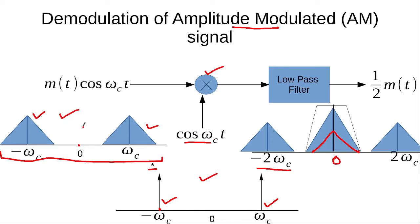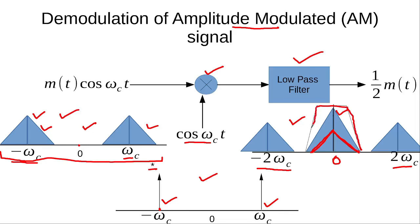Similarly, a copy of this signal is formed at +ωct. That means the -ωct part of the signal moves to 0 Hz again, and these two signals add up. The ωct part moves to 2ωct. When this signal is passed through the low pass filter, the original unmodulated signal can be recovered.